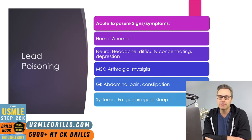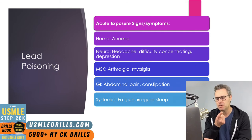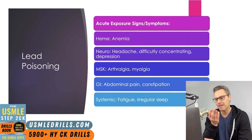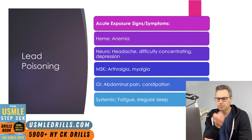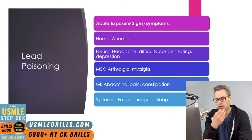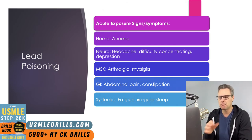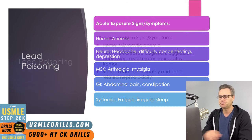Acute lead poisoning can manifest in a variety of ways: anemia, fatigue, irregular sleep, headache, concentration difficulties, depression, abdominal pain, constipation, arthralgias, and myalgias.